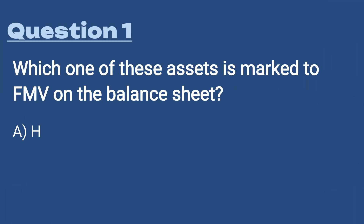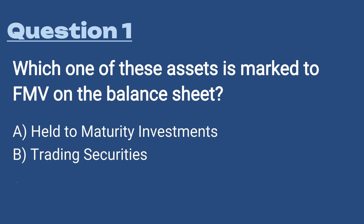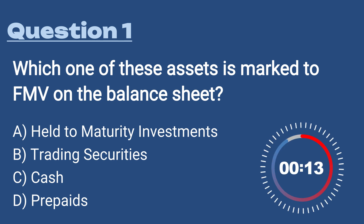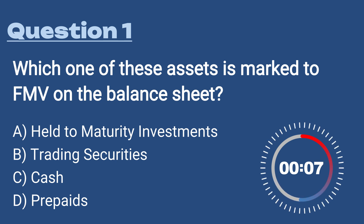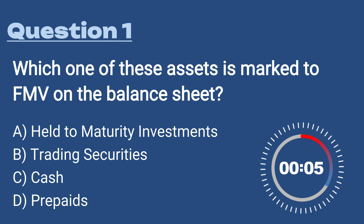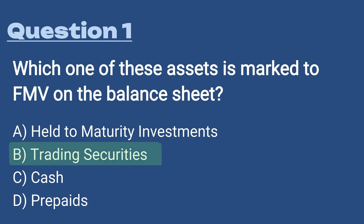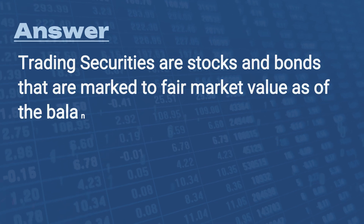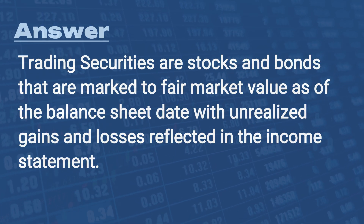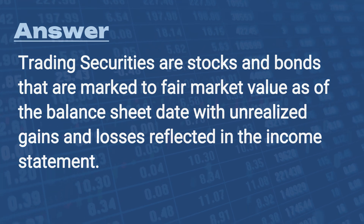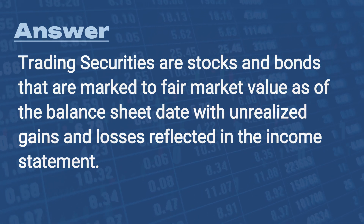Question 1: Which one of these assets is marked to fair market value on the balance sheet? A) Held-to-maturity investments, B) Trading securities, C) Cash, D) Prepaids. The answer is B, trading securities. Trading securities are stocks and bonds marked to fair market value as of the balance sheet date, with unrealized gains and losses reflected in the income statement. These are investments you're not planning to hold for a very long time.